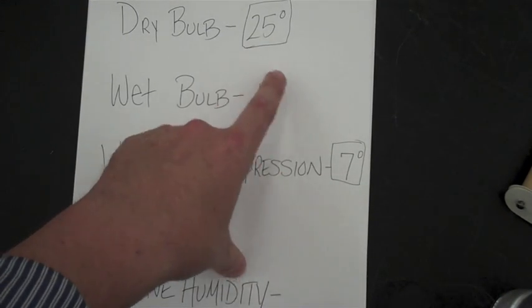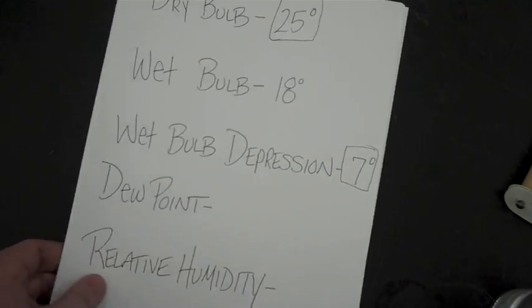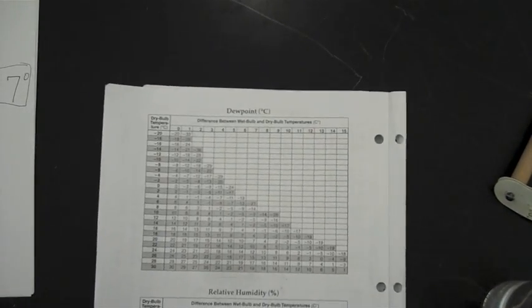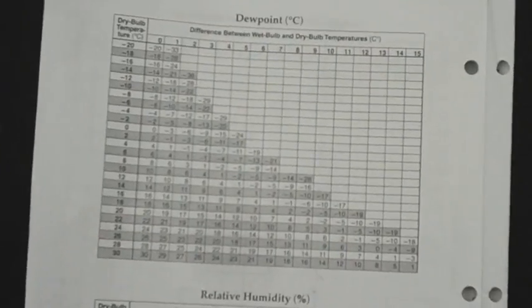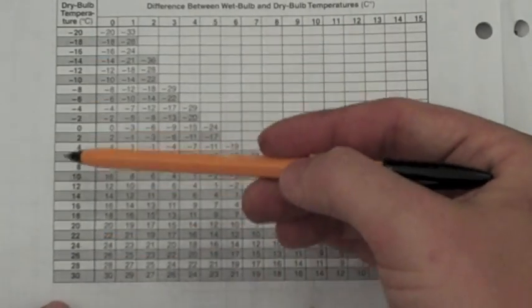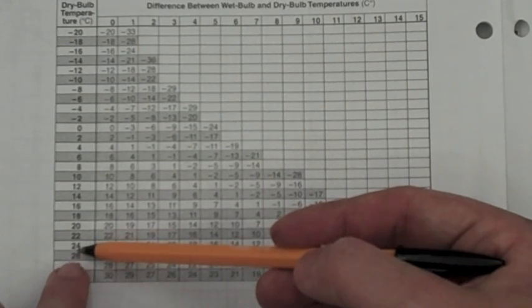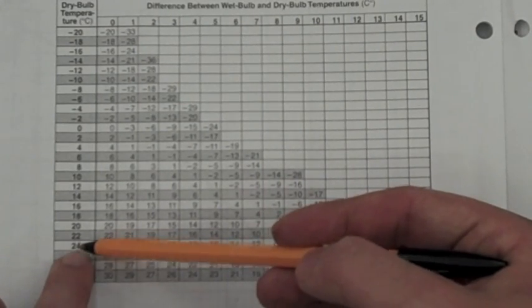Now you're going to use the dry bulb and the difference to get your relative humidity and dew point. When you come to your chart in your reference table, you can clearly see that your dry bulb, which is along the left side here, you go in between 24 and 26. That's going to give you a 25 degree dry bulb.